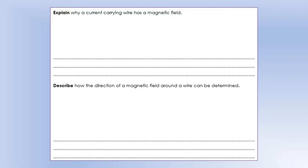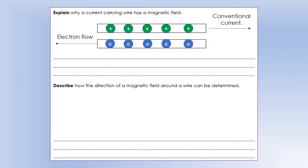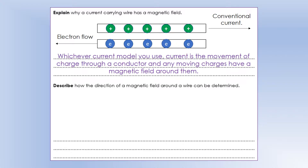In this video we're going to take a look in more depth at electromagnets specifically. The first thing we're going to look at is why does a wire with a current in it have a magnetic field? First of all, let's think about what a current actually is. There are two models for current: the flow of positive charges called conventional current, and what we now know it as - the flow of electrons, called electron flow. Regardless of the model, current is the movement of charge.